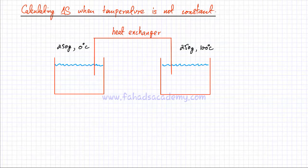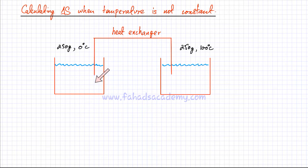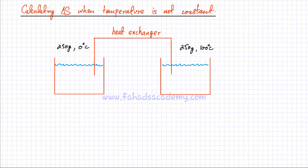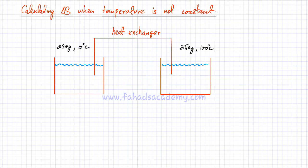In this lecture we're going to try and calculate the entropy change of a system when the temperature is not kept constant. I have a closed system with two beakers of water — one on the left and one on the right — with a heat exchanger between them, meaning heat is being transferred between the two beakers. The mass of water in each beaker is 250 grams. The temperature of the left-hand beaker is 0°C while the temperature of the right-hand beaker is 100°C. Using common sense, you would know that heat is going to flow from the right-hand beaker to the left-hand beaker.